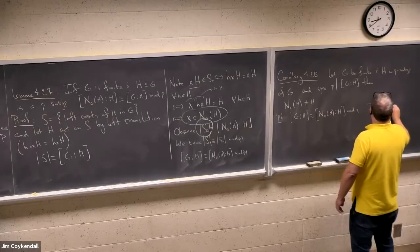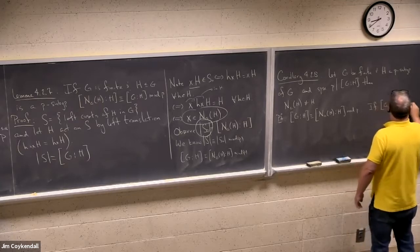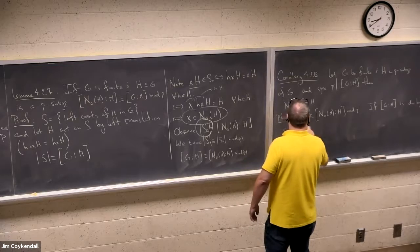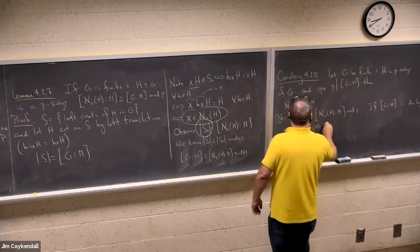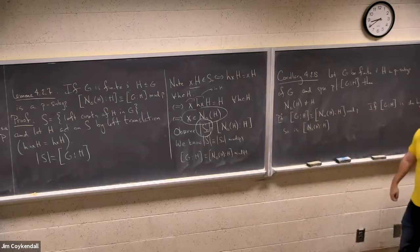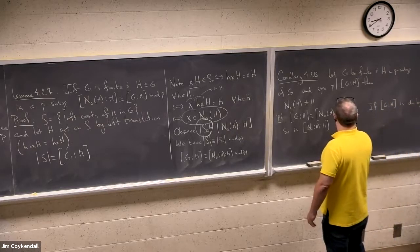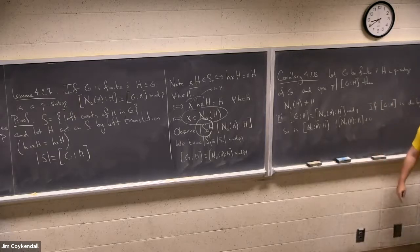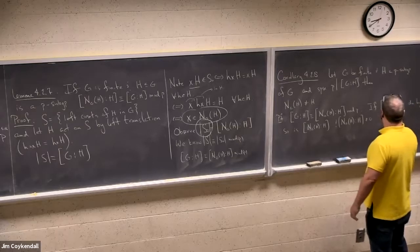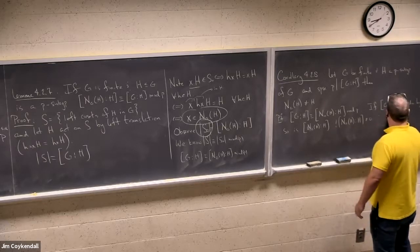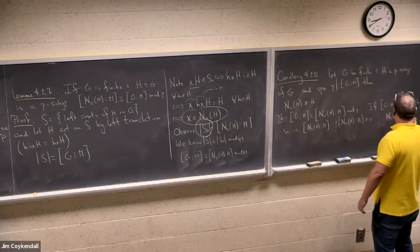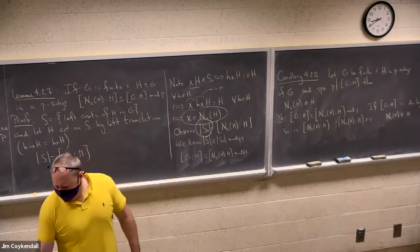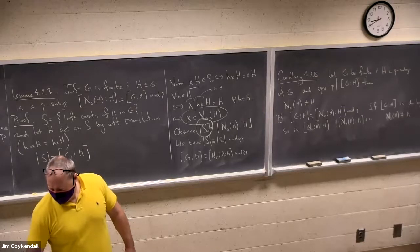And we know that S_0 is congruent to S mod P. So now the result follows because this is the index of H in N_G(H), and this is the index of H in G. So one of these cosets is in S_0 if and only if the representative is in the normalizer. When you're counting these things, what you're doing is you're counting cosets in the normalizer. Okay, any questions? Corollary: Suppose that P divides the index of H in G. That is to say, the normalizer must properly contain H.